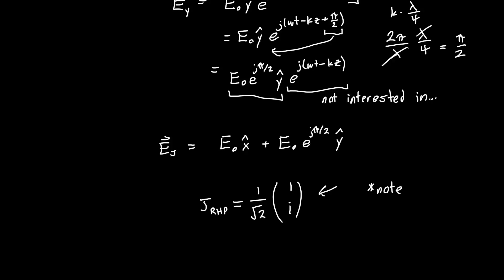Now, I should make one note on conventions. So I've been using the convention that a traveling wave is represented as e^(j omega t minus kz). There are some people that do e^(j kz minus omega t). And in this case, right hand polarized light would be 1 minus i. There are also different conventions on whether this is right hand polarized or left hand polarized.